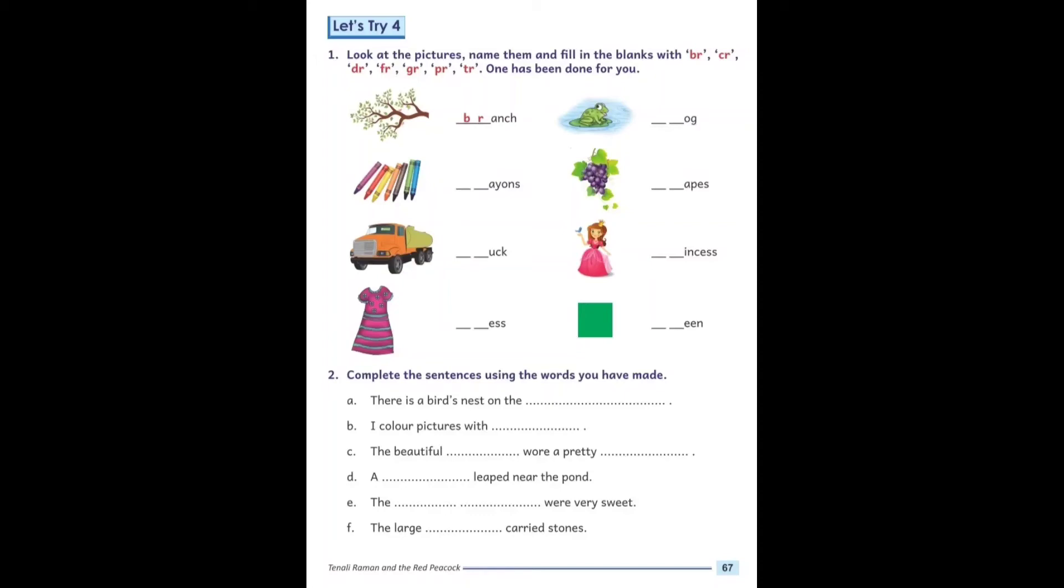Next identify the picture: crayons. Here we write CRA-YON-S, crayons, CR blend. Next is truck, T-R-U-C-K, TR blend. Next frog, F-R-O-G, FR blend. Next identify the picture: grapes. Here we write G-R-A-P-E-S. Next we use PR blend, princess, P-R-I-N-C-E-S-S. Last one, we will write G-R-E-E-N, green.